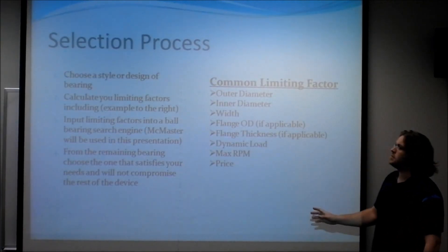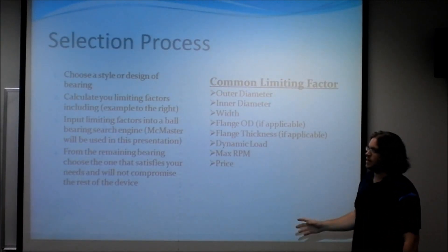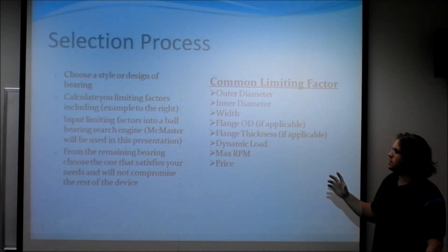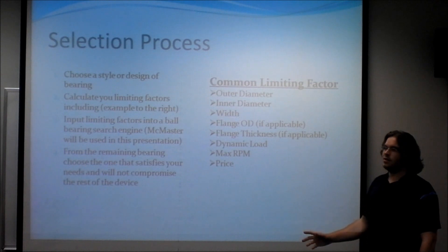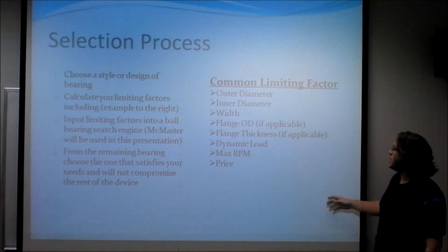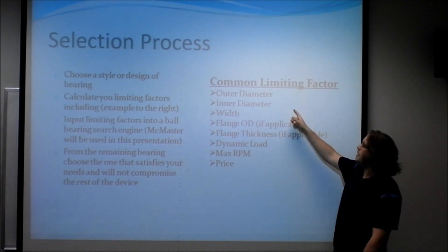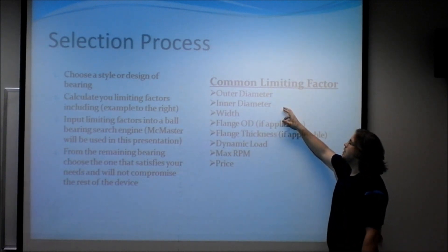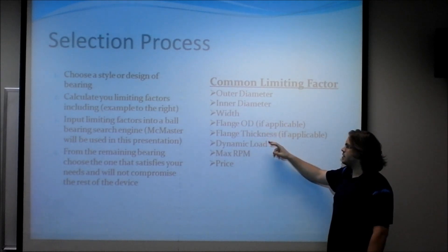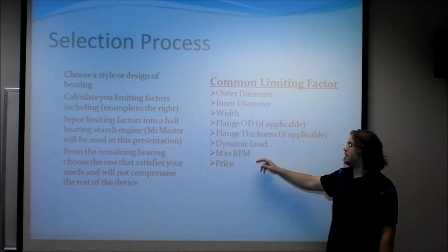The three biggest steps are choosing the style and design of the bearing, finding what the limitations are, and from there on finding what the standards are and the standard sizes that are readily available. The most common limitations are the outer diameter, inner diameter and the width. Also, we have the flange size, which would be the outer diameter and the thickness, how much load, the speed and the price.